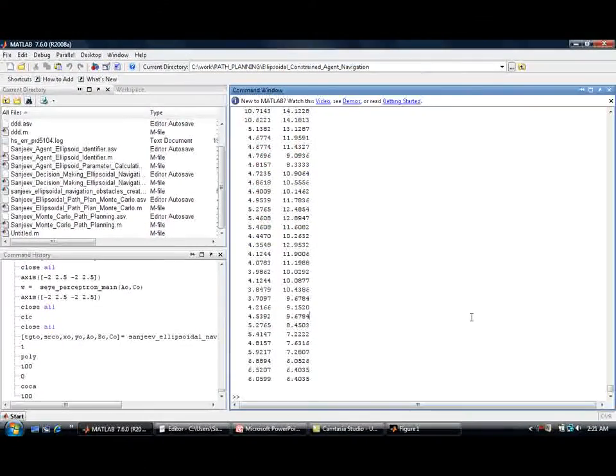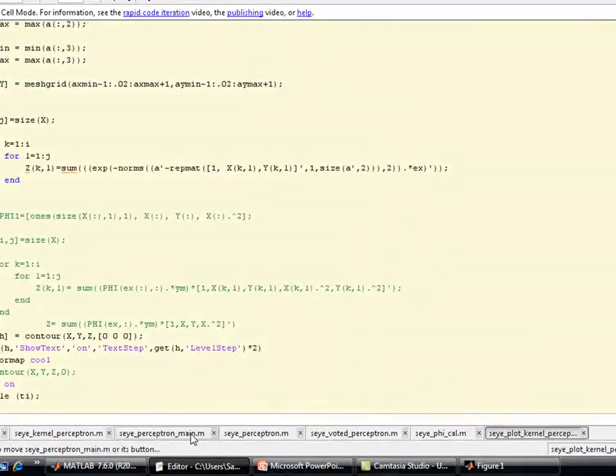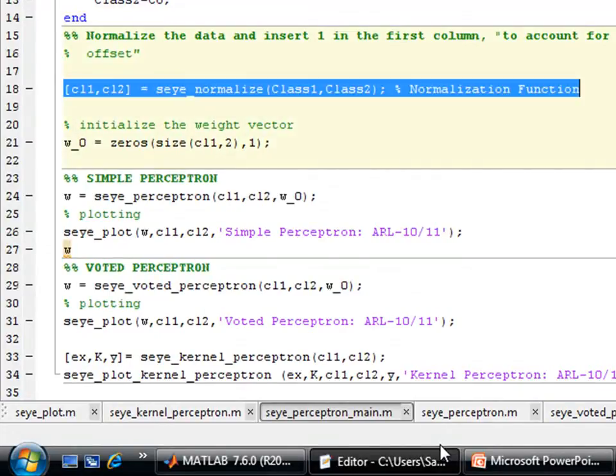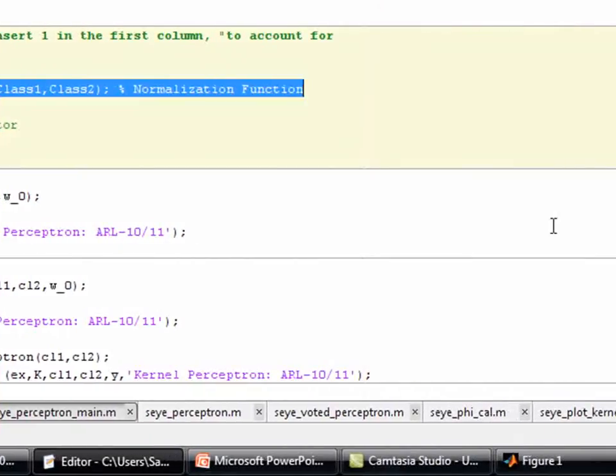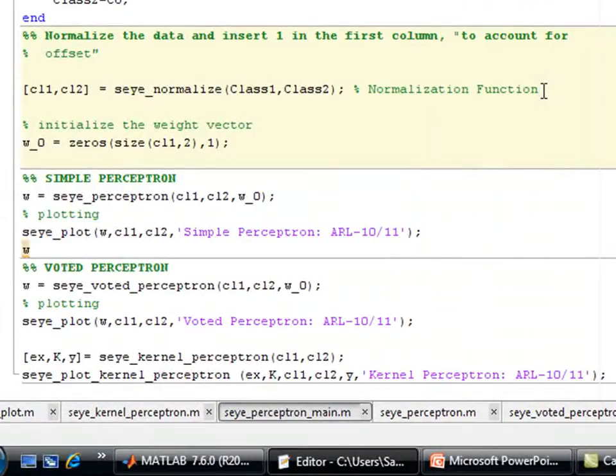In the code that is available for download, that is this code, here the first step that I have involved in this algorithm is the normalization. Here is a code that normalizes the dataset. So you don't need to write a code for normalizing the dataset, I have already done it for you.